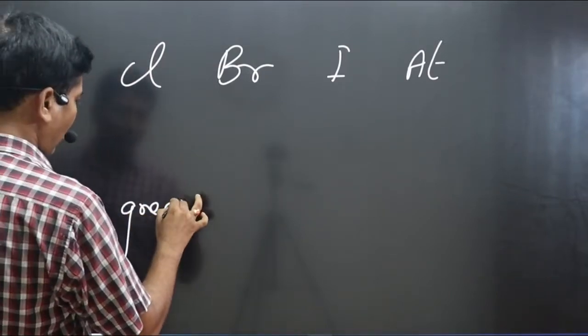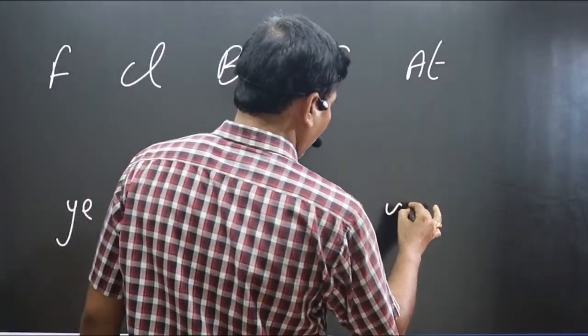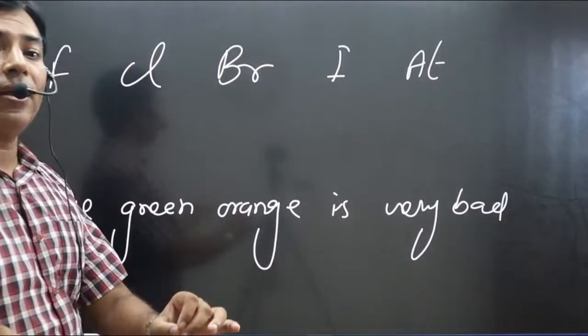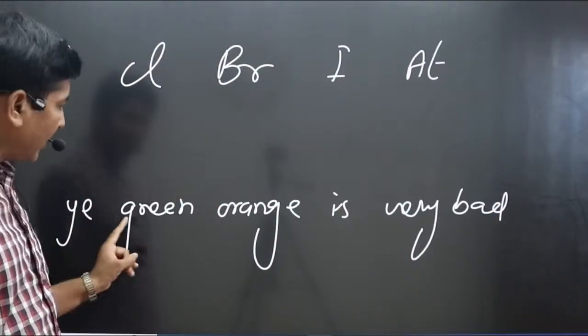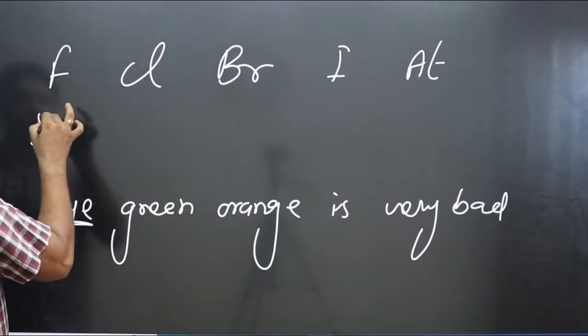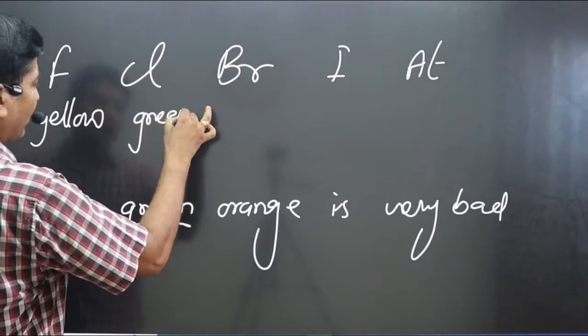A green orange is very bad. From this mnemonic, you will get: yellow color for fluorine, green color for chlorine, and orange color for bromine.